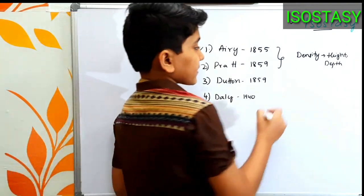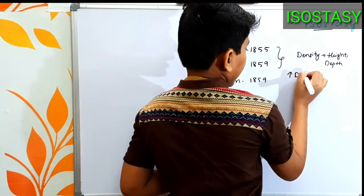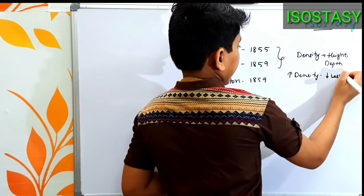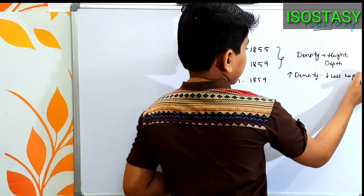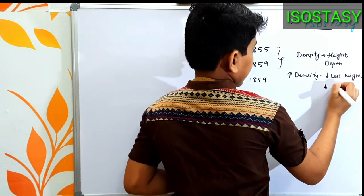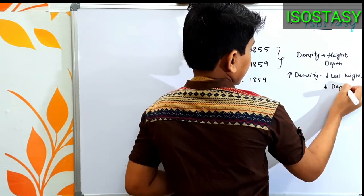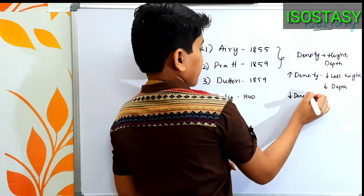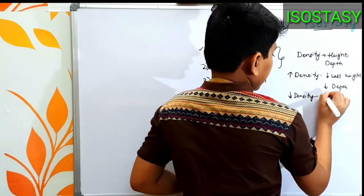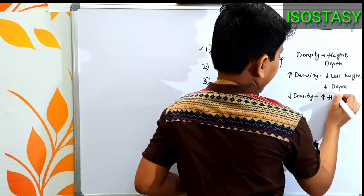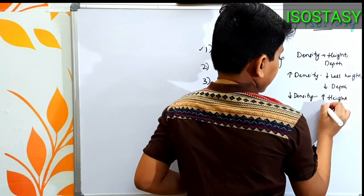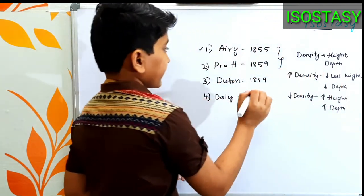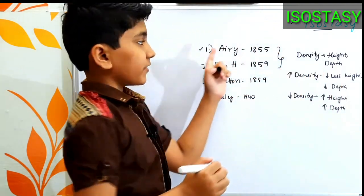First, if there is high density, then we have less height and less depth. If there is less density for the objects, then we have more height and a high amount of depth. This was the scientific principle given by Airy.